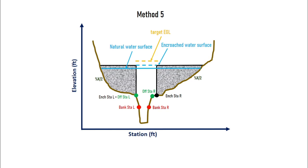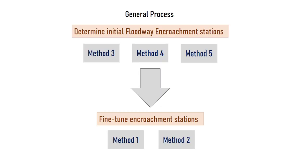So what is the general process? General process is to estimate the floodway using method 3, 4 or 5, and later refine it with method 1 and 2.